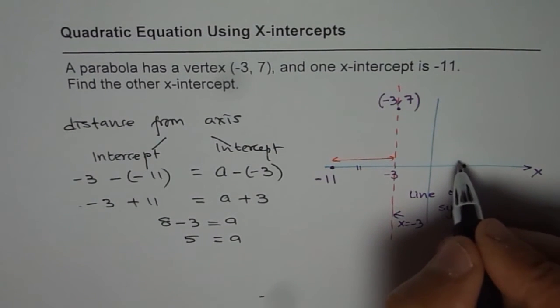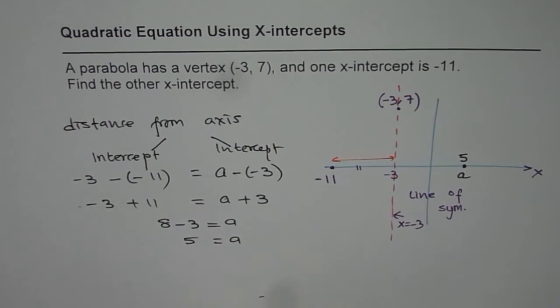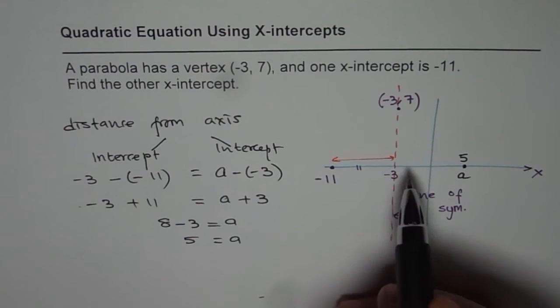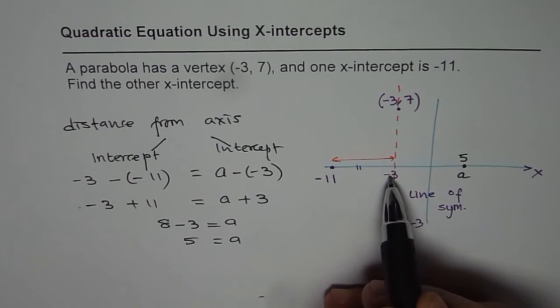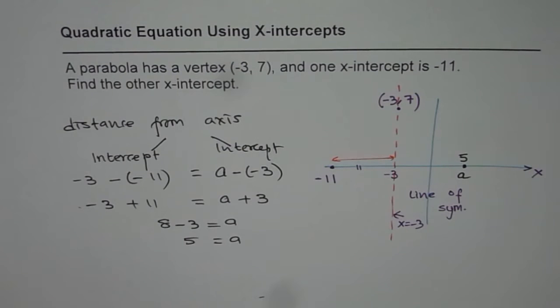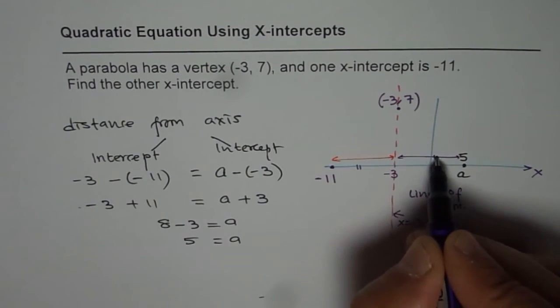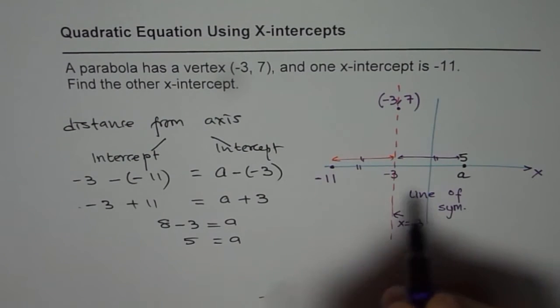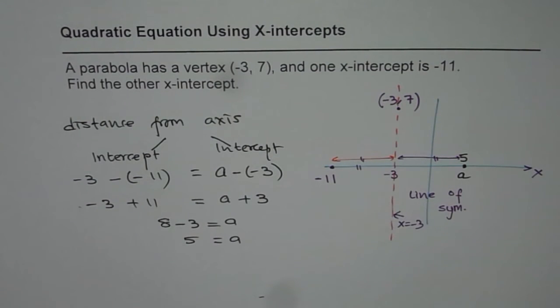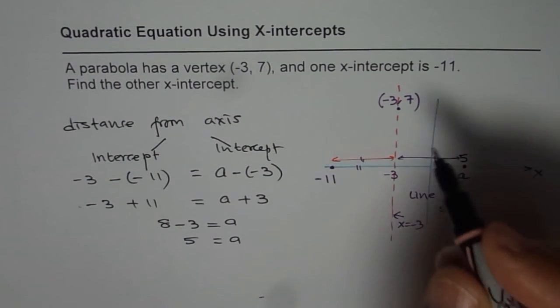Do you see that? So A value for us is 5. Now you can check. 5 minus -3 is 8. So this distance has to be same and that is how using x-intercepts and the line of symmetry, now we can actually find the answer. I hope you understand and appreciate this method.